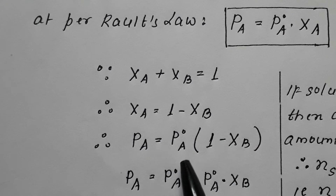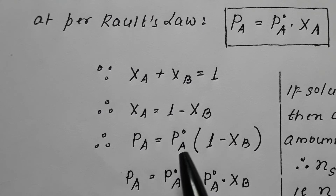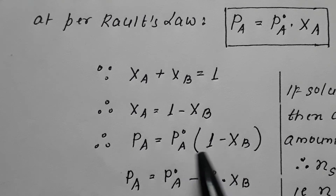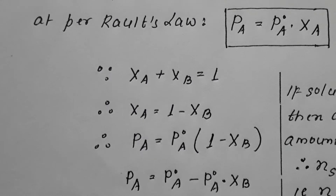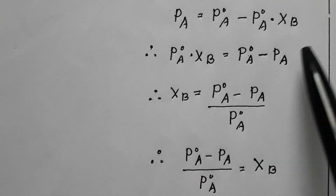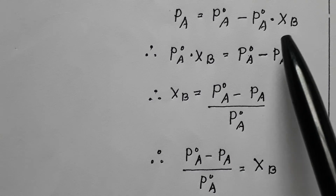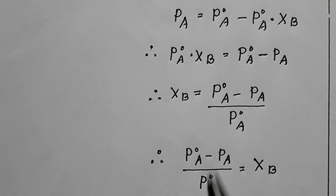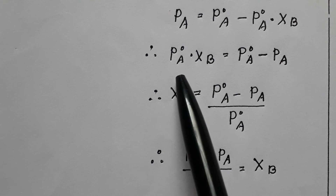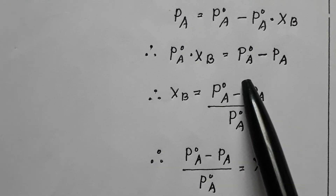Therefore PA equals P0A into (1 minus XB). Opening the bracket, PA equals P0A minus P0A·XB. Rearranging by bringing P0A·XB to the left and PA to the right, we get P0A·XB equals P0A minus PA.